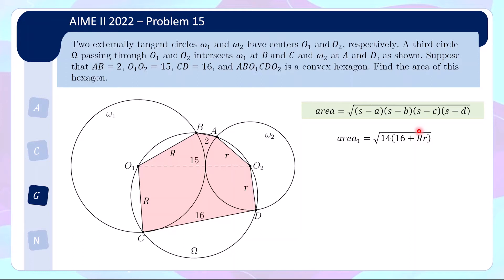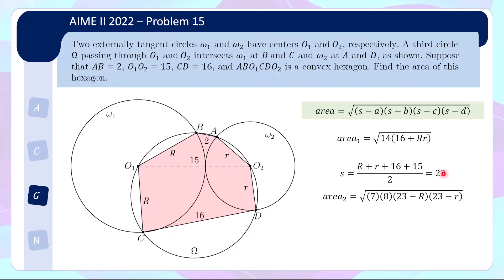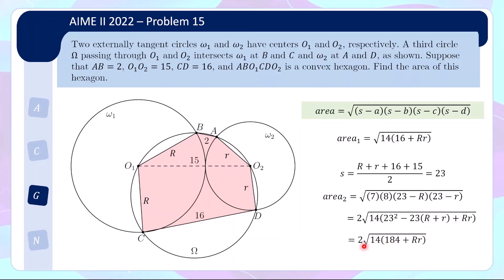Let's find the area of the second quadrilateral. For the second one, again we have r, 15, R, and 16, and the two r's add to 15. So we know the semi-perimeter without solving for the radii. We substitute in 23 minus 16, 23 minus 15, 23 minus r, 23 minus R. Similarly, we can pull out a factor of 2 outside of the square root, and then we get the same factor of 14. We expand again to get r plus R, which we substitute as 15. So again, we can write everything in terms of just one unknown — the product rR.